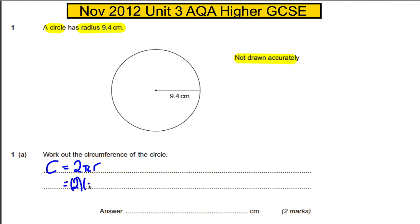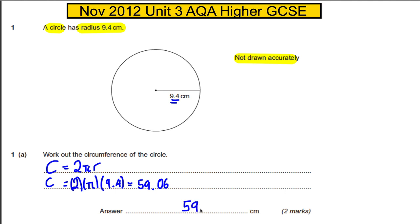So that's 2 multiplied by pi multiplied by 9.4. Tap that into your calculator: 2 times pi times 9.4 gives you 59.06. It's best to write this to 1 decimal place, since the measurements were given to 1dp, so the answer is 59.1.